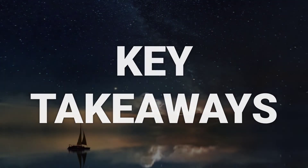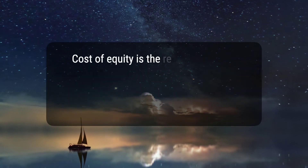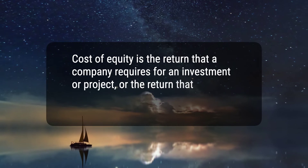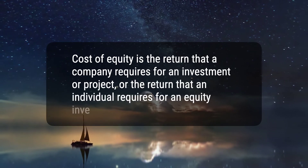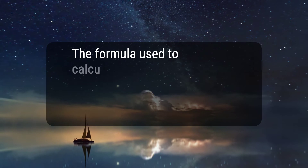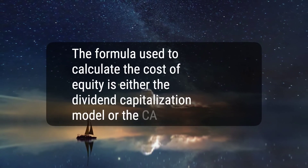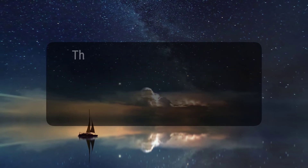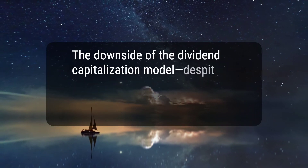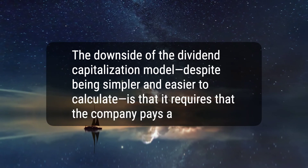Here are five key takeaways. 1. Cost of equity is the return that a company requires for an investment or project, or the return that an individual requires for an equity investment. 2. The formula used to calculate the cost of equity is either the dividend capitalization model or the CAPM. 3. The downside of the dividend capitalization model, despite being simpler and easier to calculate, is that it requires that the company pays a dividend.